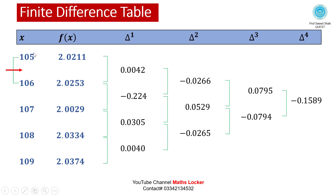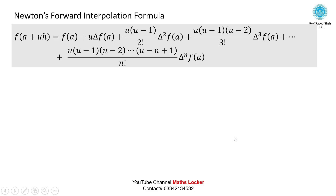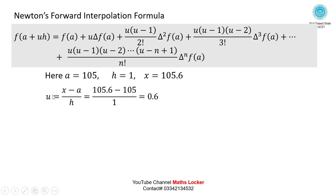The required value 105.6 lies between two table values, so draw the forward diagonal. Applying Newton's Forward Interpolation Formula, we need u: here a = 105, h = 1, x = 105.6, so u = (105.6 − 105)/1 = 0.6. The values delta f(a), delta²f(a), delta³f(a), delta⁴f(a) are taken from the table.